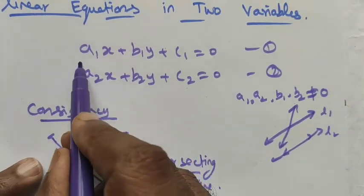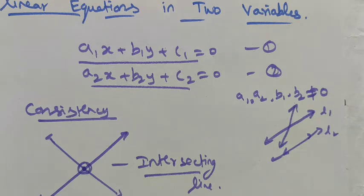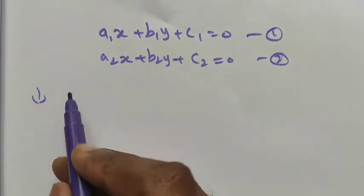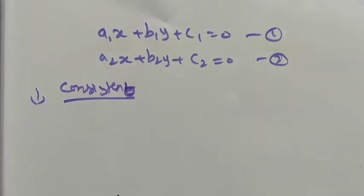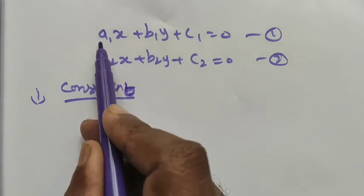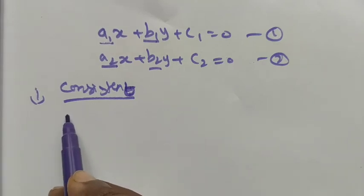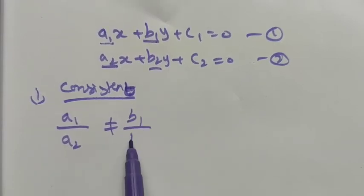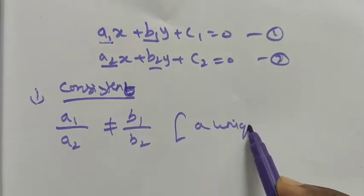In the algebraic method, using these two equations, we can find whether we have a consistent or inconsistent solution. For consistency with a unique solution, we look at the coefficients of the variables. If a1/a2 is not equal to b1/b2, then we have a unique solution — one solution.